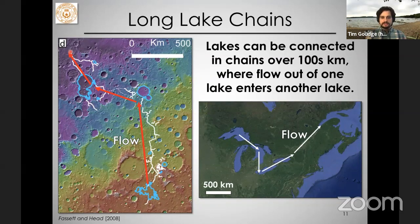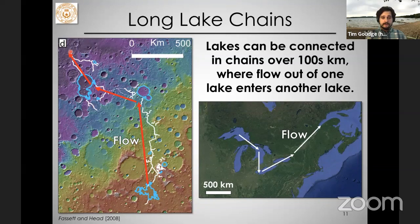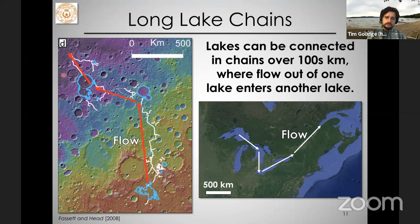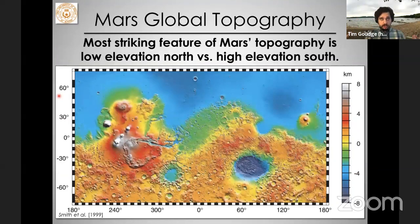These systems were interconnected and very large, with many of the large-scale topographic features we see for lakes on Earth. This flow was moving northward, which raises a reasonable question: where is all that water going? If we zoom out and look at the global topography of Mars, we see a major dichotomy between high elevations in the south — the ancient southern highlands — versus low elevations in the north, the northern lowlands.